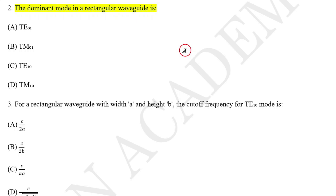In waveguide there should be three types: one is circular, another one is cylindrical, and another one is rectangular waveguide. These are the most important types. The second question covers the dominant mode in a rectangular waveguide.